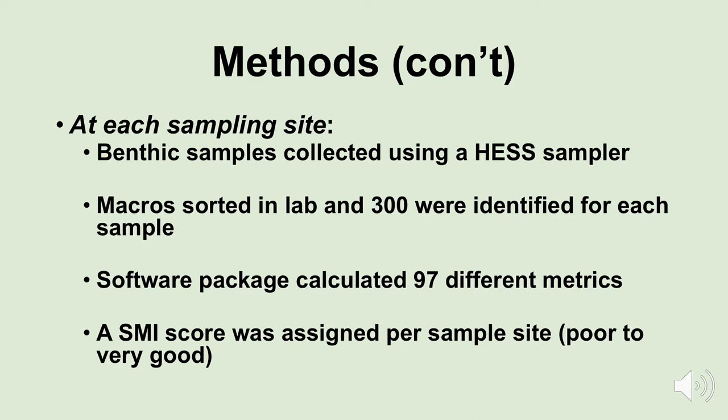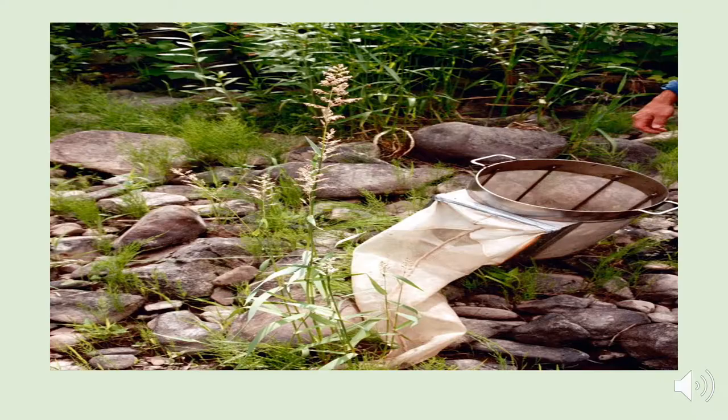From the software package we got an SMI score assigned per sample, which would give us a water quality rating at the site in the field anywhere from poor to very good. Here's a picture of a Hess sampler — basically a steel or metal tube, and at the end of the tube we have some cloth lining. We put that Hess sampler into a spot in the stream.